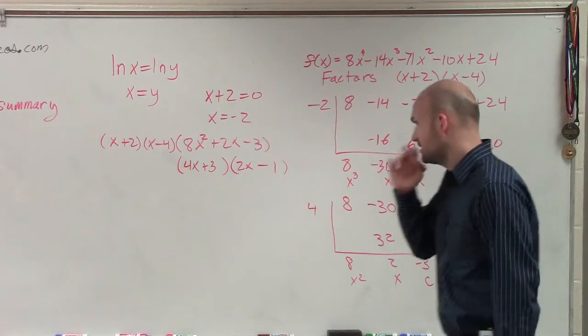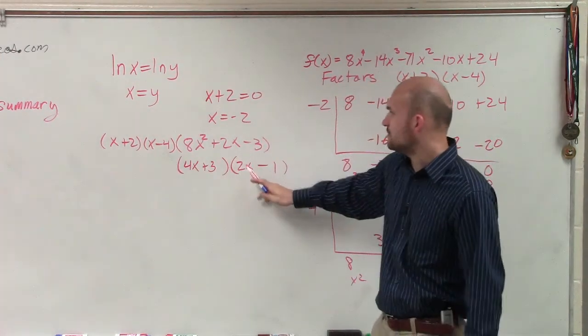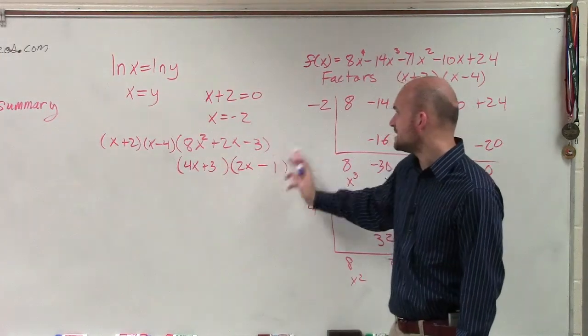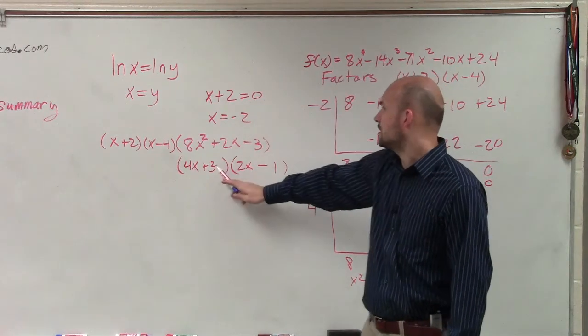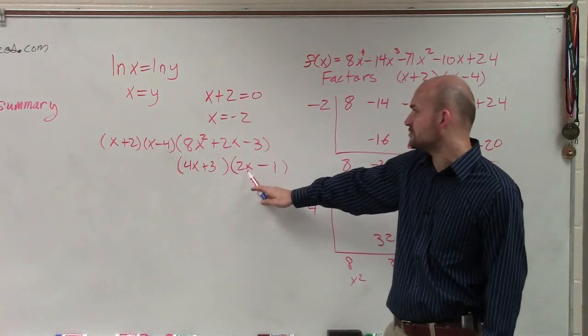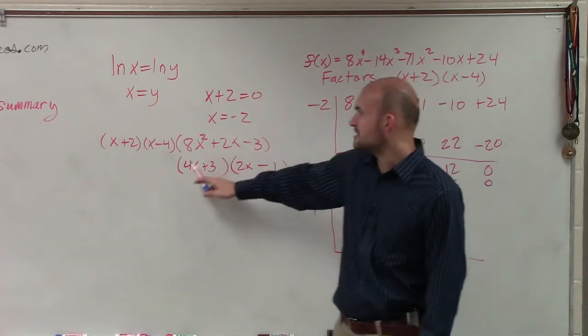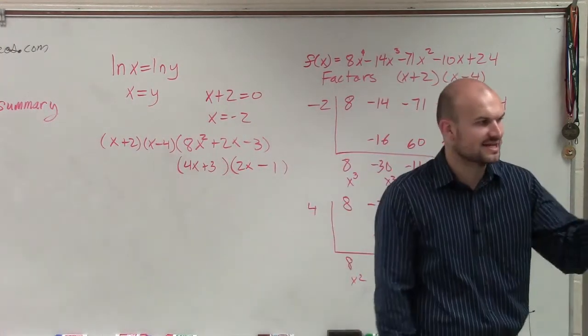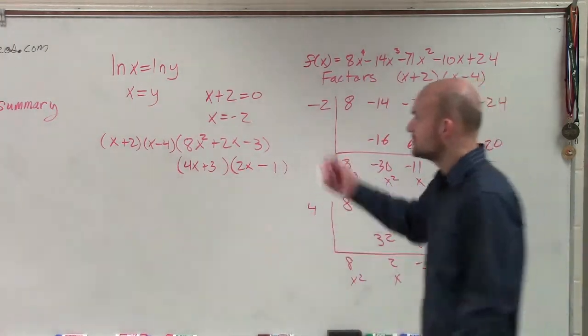All right, so let's double check to make sure that works. 4x times 2x is 8x². Negative 1 times 3 is negative 3. 3 times 2x is going to be 6x. And then negative 1 times 4x is negative 4x. 6x minus 4x is 2x. So yes, that works.